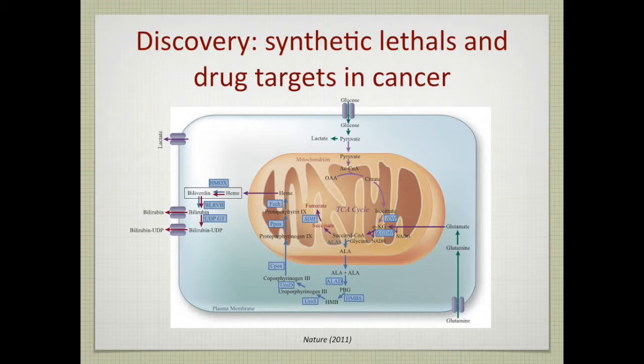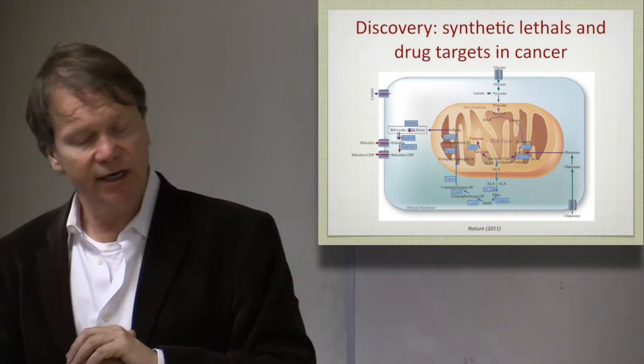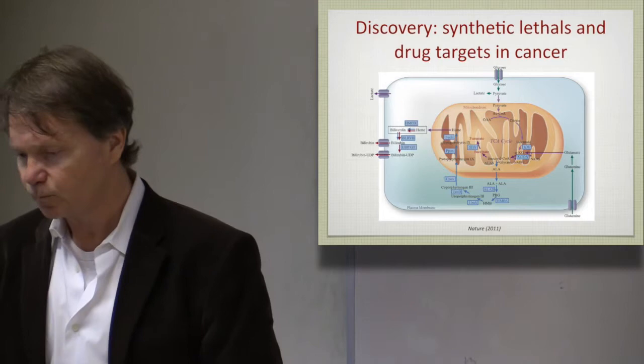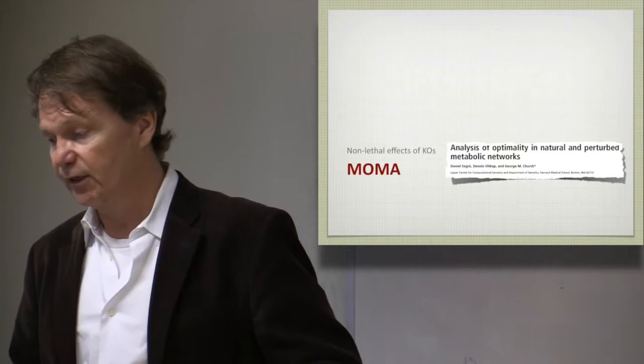And of course, heme was overproduced, converted into bilirubin, and that was one of the predictions that the bilirubin would be found in urine or in blood. And that turned out to be the case. So this is an astonishing example resulting from using synthetic lethal calculations.